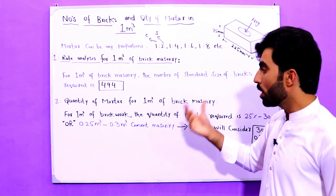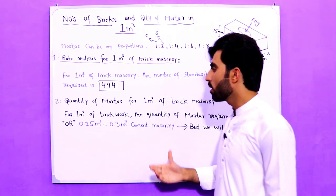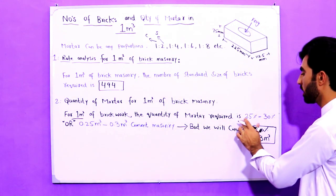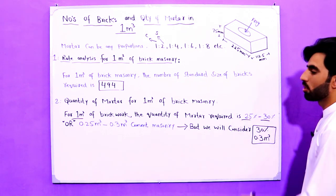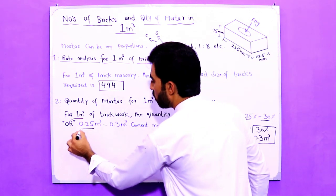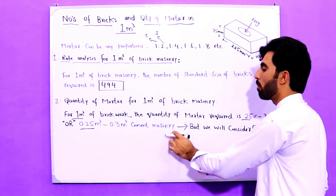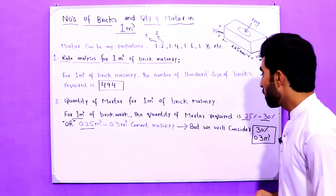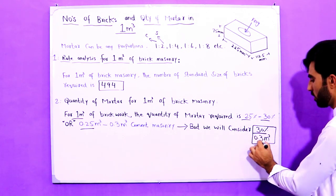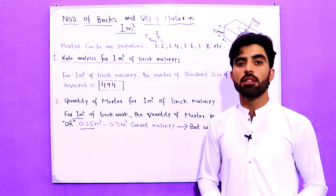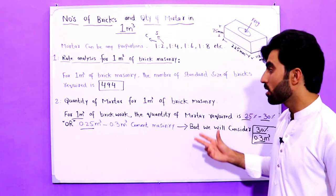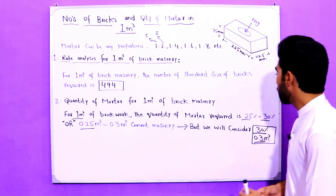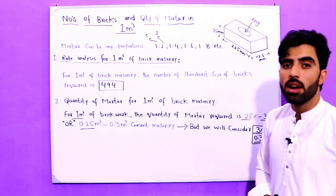Now for the quantity of mortar for 1 meter cube of brick masonry: for 1 meter cube of brickwork the quantity of mortar required is 25% to 30%, or 0.25 to 0.3 meter cube. We will consider 30% or 0.3 meter cube quantity of mortar. If the brick masonry is more than 1 meter cube, say 4 or 5 meter cube, then we consider 0.35 meter cube.